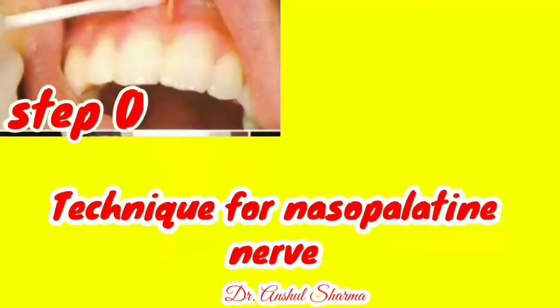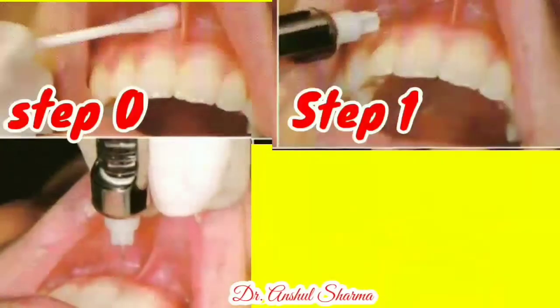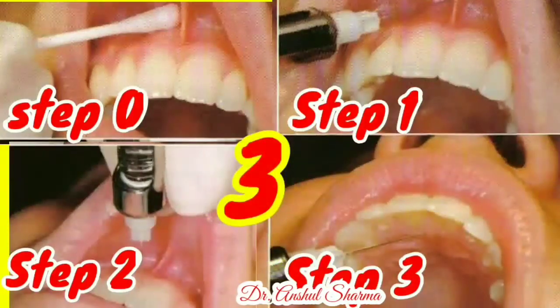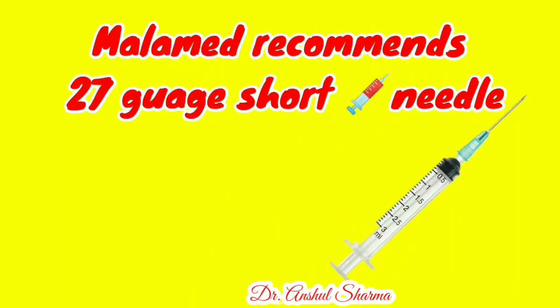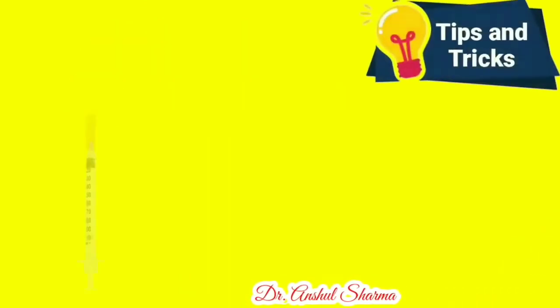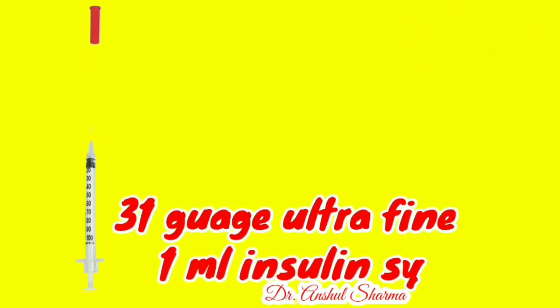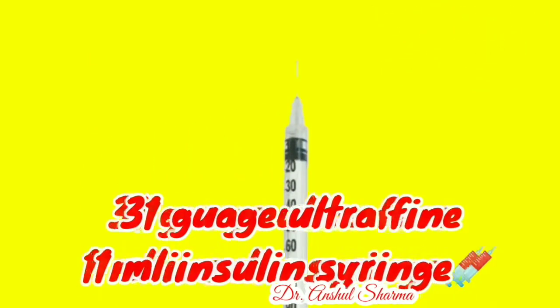The technique for the nasopalatine nerve block involves a multiple needle penetration technique — exclusively a three-step injection technique. Malamed recommends a 27-gauge short needle; however, a clinical tip is that you can also use a 31-gauge ultra-fine 1 ml insulin syringe.